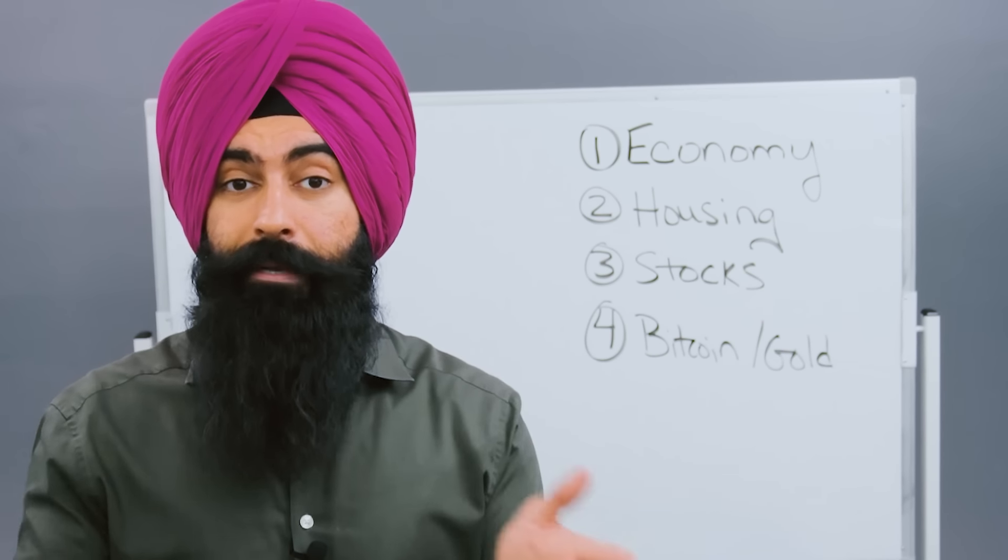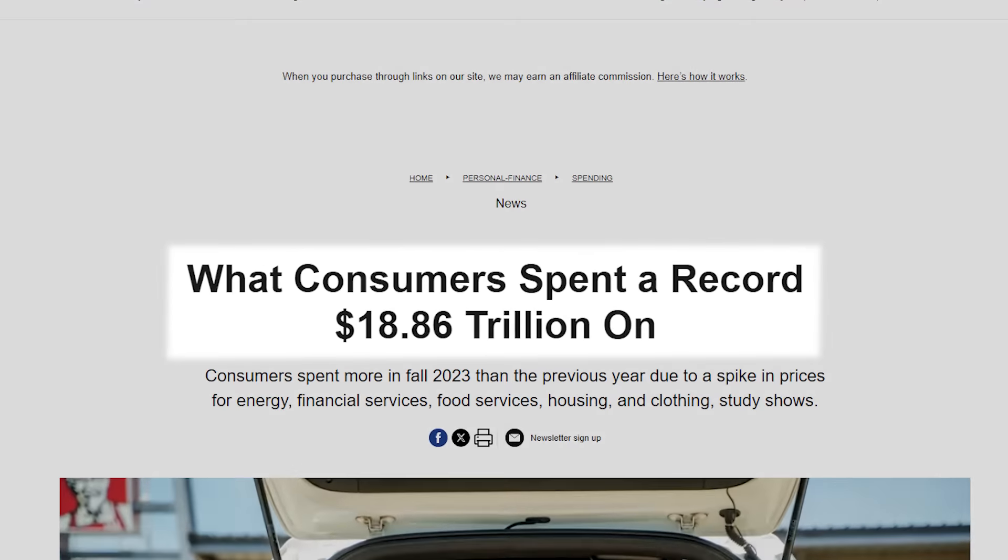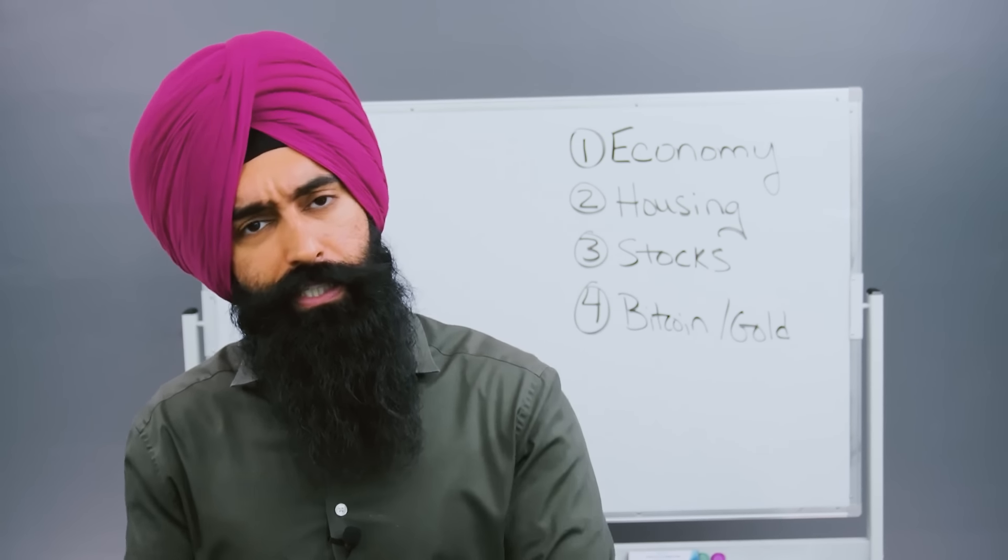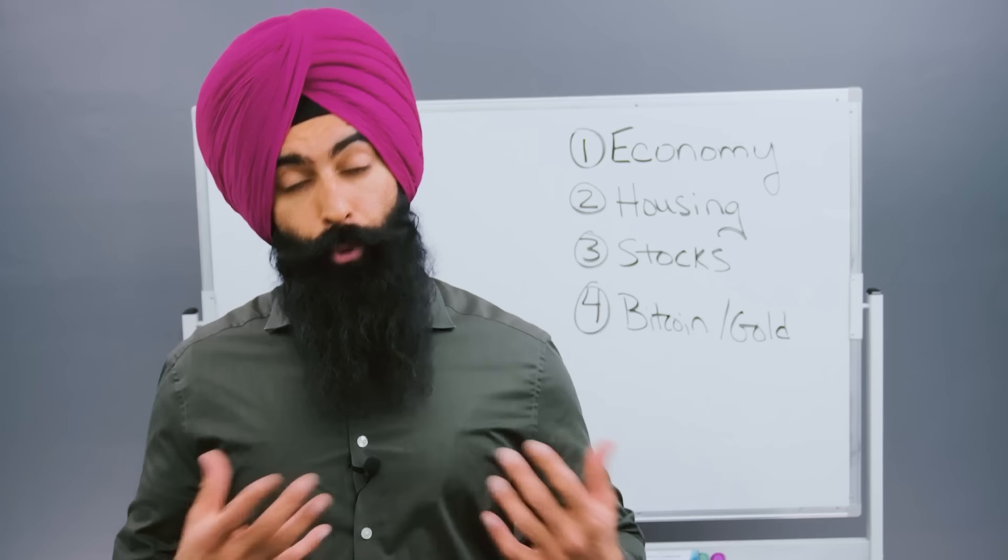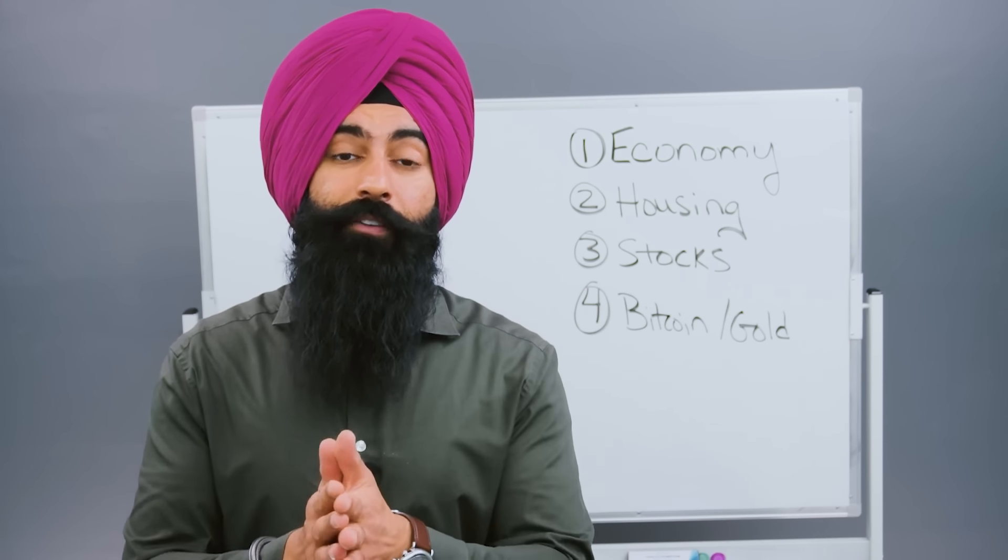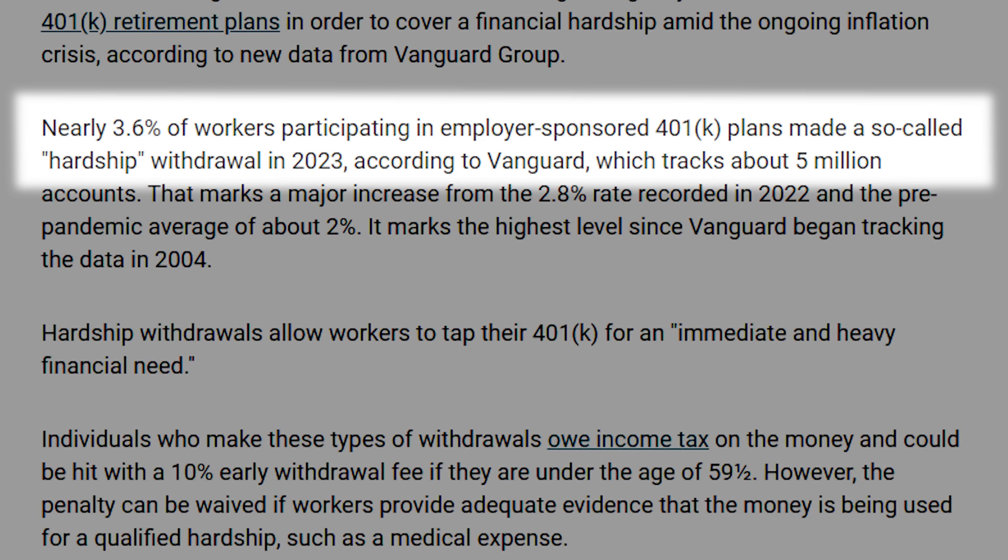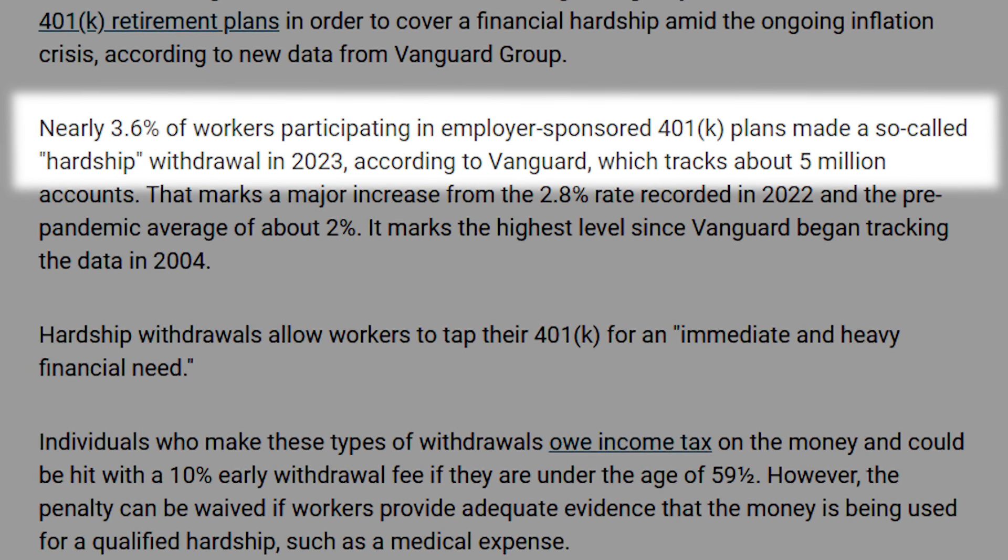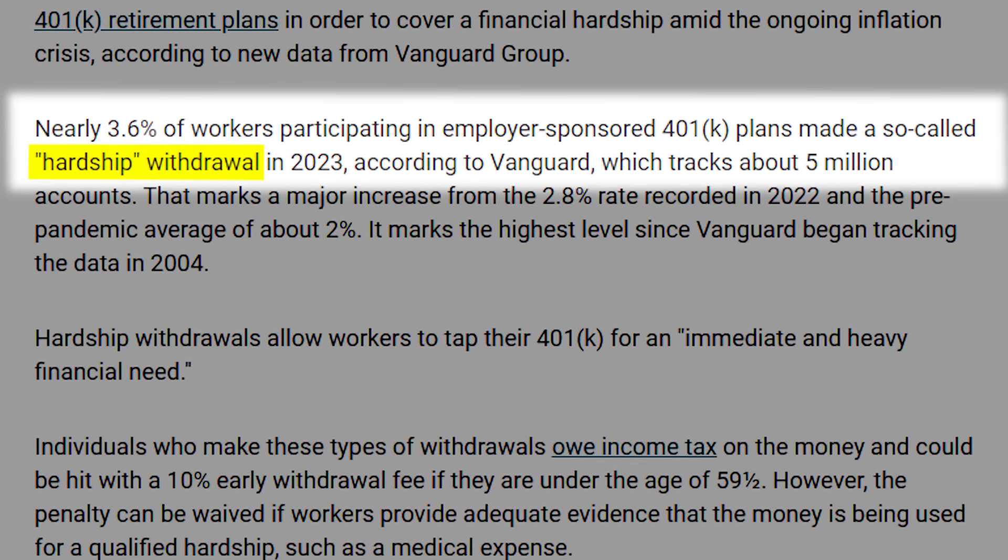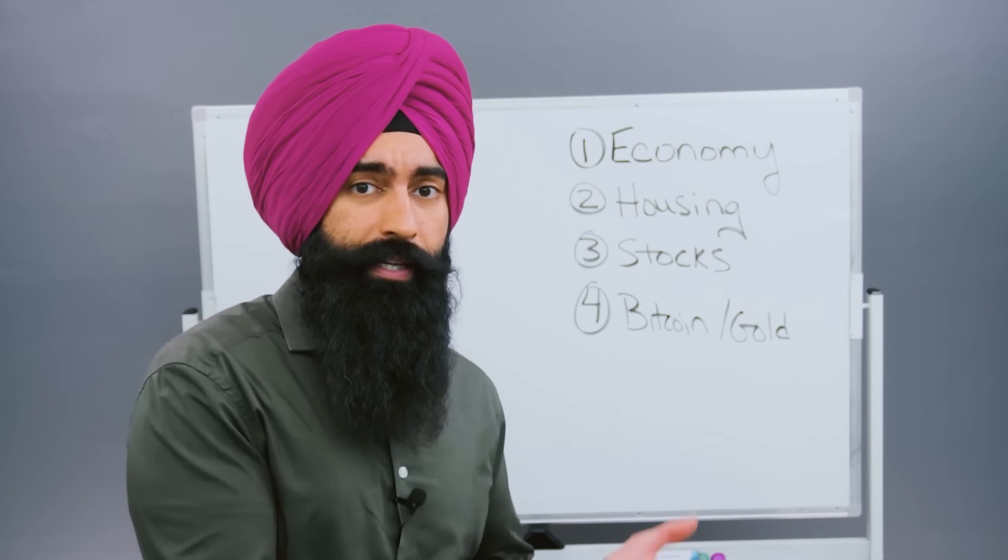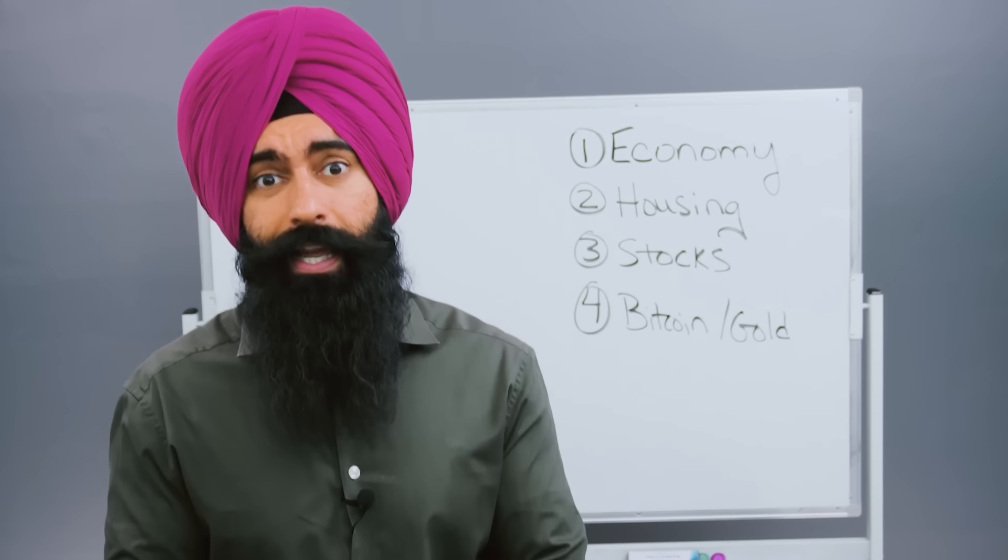So our economic system runs on spending. The more money you spend, the more money somebody else makes. And so when our economy is booming, that means people are spending money. Well, consumers spent a record amount of money in 2023, and they are still spending money like crazy in 2024. This is great news for the economy because it keeps the machine moving. But the risk here and the concern here is how are people actually spending this money? Well, in 2023, we also saw a record number of Americans pull money out of the 401ks through a hardship withdrawal so they could continue spending.